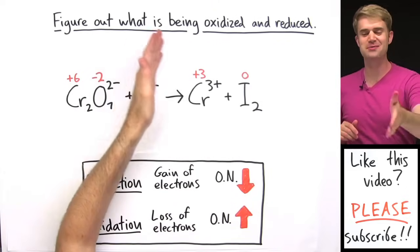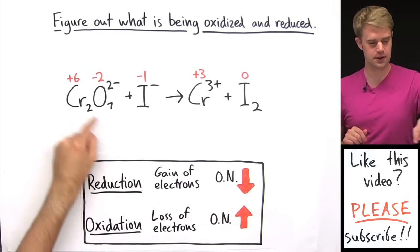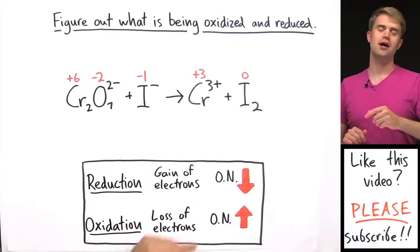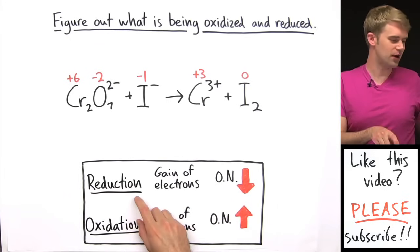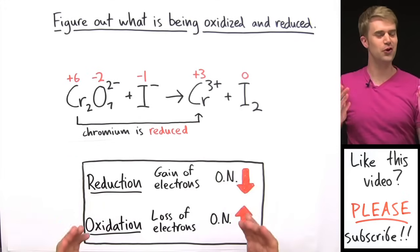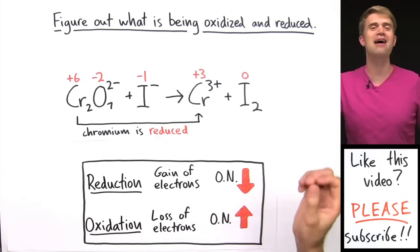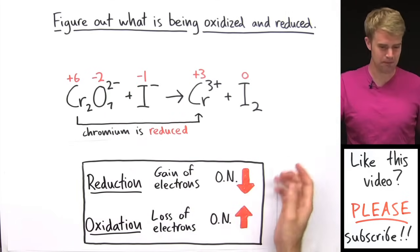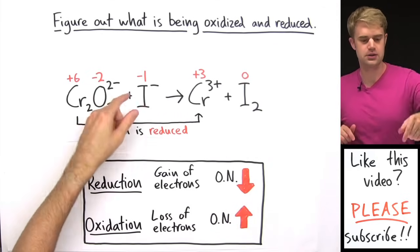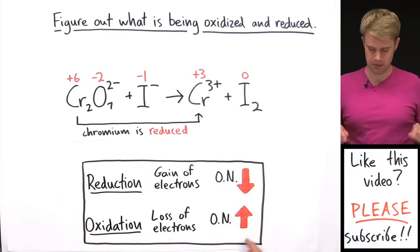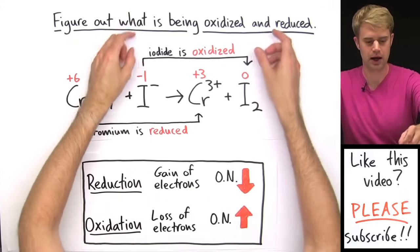Step 2: figure out what's being oxidized and what's being reduced. We're going to look at the changes in oxidation numbers to figure this out. Chromium is plus 6 on this side of the equation and it's plus 3 over on this side, so its oxidation number is going down. When an element's oxidation number goes down, that means it is undergoing reduction — chromium is being reduced from plus 6 down to plus 3. Now we'll move to I1- iodide. Iodide is minus 1 here and then it's 0 here, so iodide's oxidation number is going up from minus 1 to 0, meaning it is undergoing oxidation. So iodide is being oxidized from minus 1 to 0.